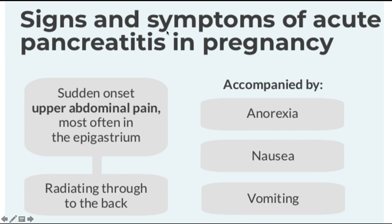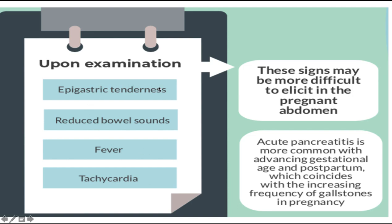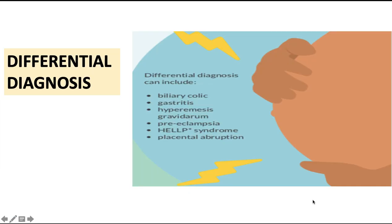The signs and symptoms of acute pancreatitis in pregnancy include sudden onset of upper abdominal pain, most often in the epigastrium, radiating through to the back. It is accompanied by anorexia, nausea, and vomiting. On examination there is epigastric tenderness, reduced bowel sounds, fever, and tachycardia. These signs may be more difficult to elicit in the pregnant woman. Acute pancreatitis is more common with advancing gestational age and the postpartum period, coinciding with increasing frequency of gallstones in pregnancy.